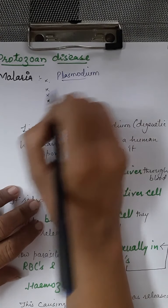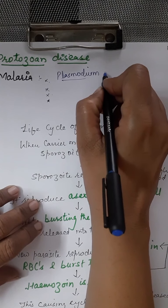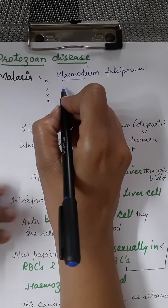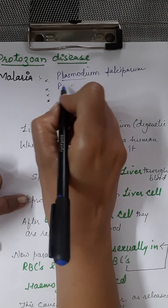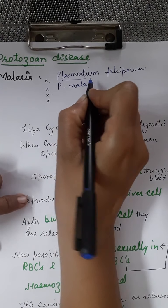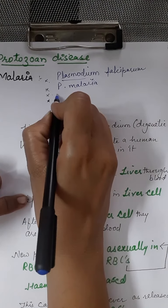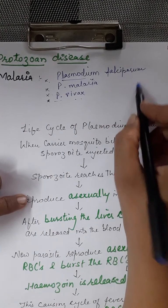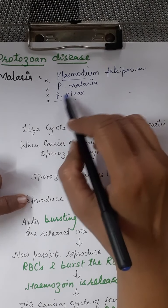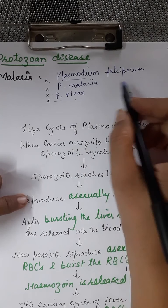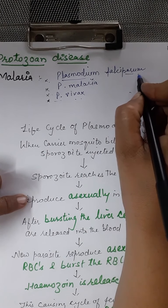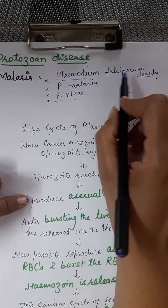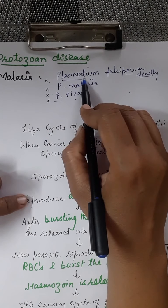Plasmodium has various species — either Plasmodium falciparum, or Plasmodium malariae, or Plasmodium vivax. These are the most common types of malaria occurring in India. Out of these, Plasmodium falciparum is the most deadly type.